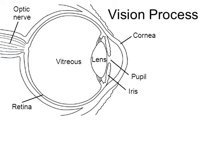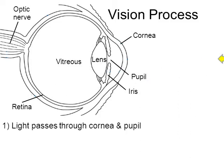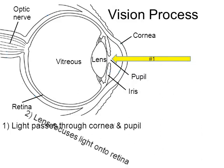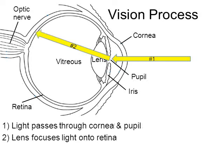Now I want to quickly go over the process of vision — the pathway that light travels. In the animation you see step number one: a yellow beam of light entering, passing through the cornea, passing through the pupil, which is open right now. What happens next is the lens, which we mentioned earlier.